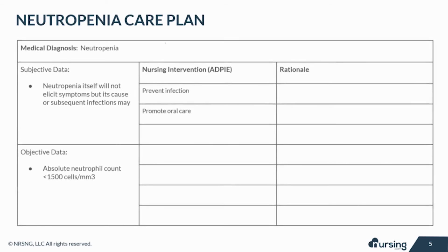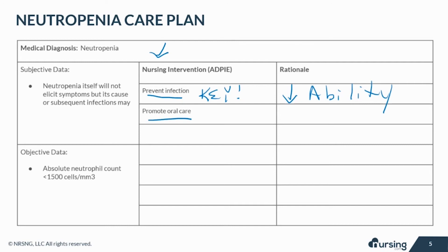Let's take a look at some of the nursing interventions which are important in caring for a patient with neutropenia. Preventing infection is key. Patients with neutropenia are at an increased risk for infection and have a decreased ability to fight infection. With this in mind, it's important to avoid any unnecessary lines, drains, tubes, and to maintain appropriate care and cleaning and discontinue lines as soon as they are no longer medically indicated.